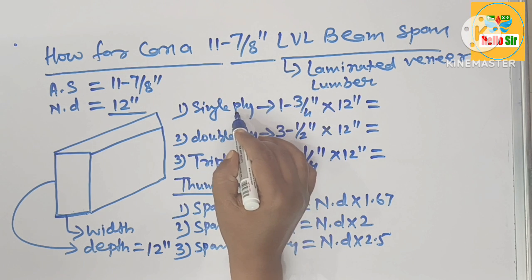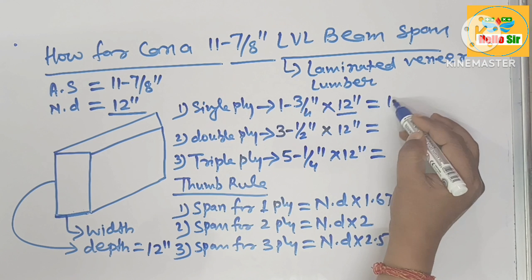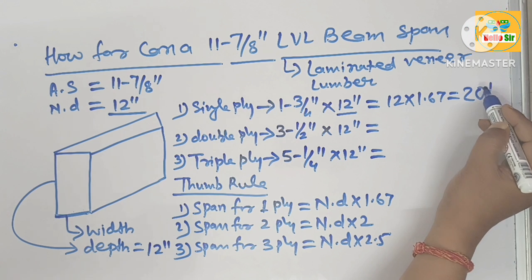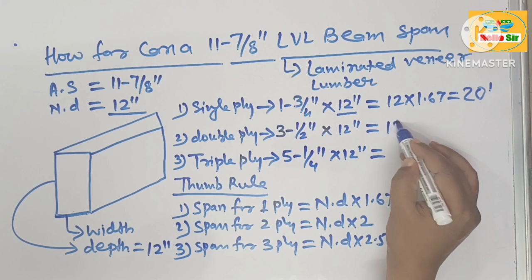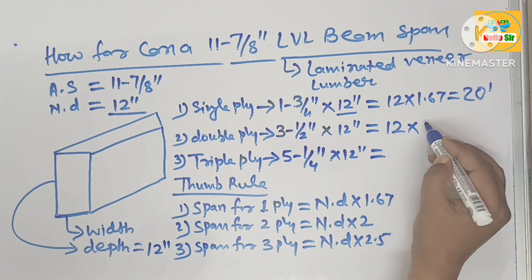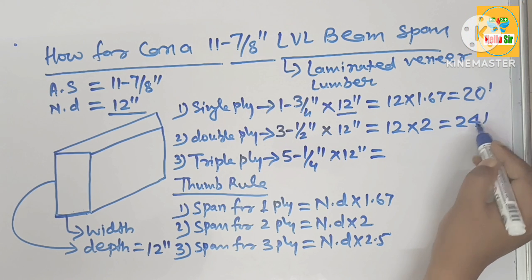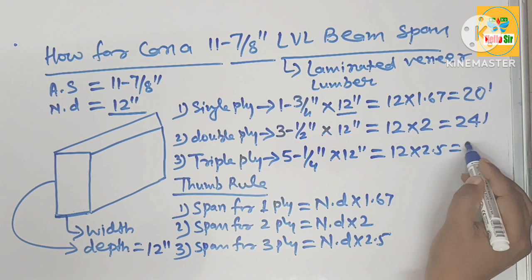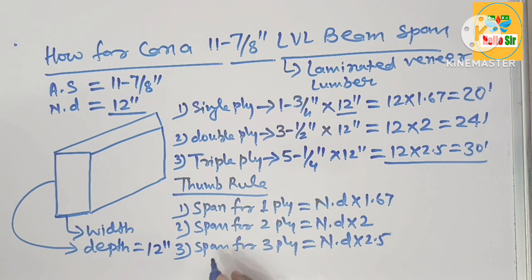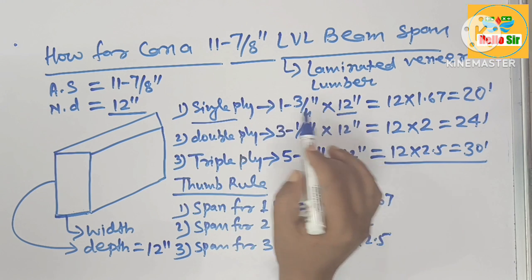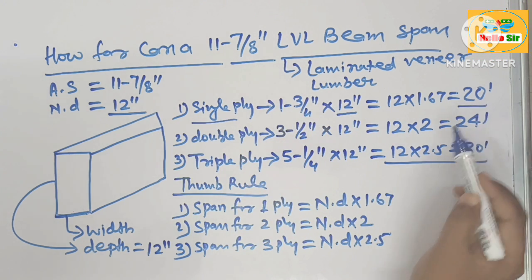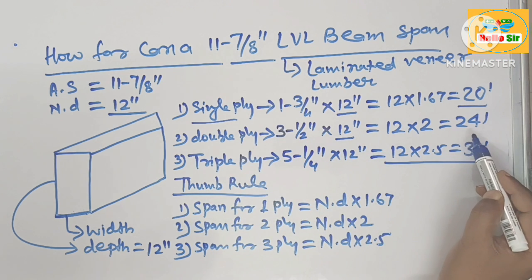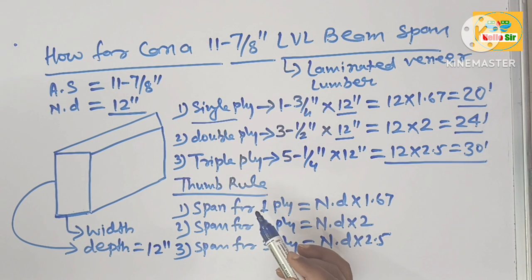For single ply, the nominal depth is 12 inches times 1.67, which equals about 20 feet. For double ply, 12 times 2 equals 24 feet. For triple ply, 12 times 2.5 equals 30 feet. This means single ply 12 inch LVL can span a maximum distance of 20 feet, and double ply 12 inch LVL can span a maximum distance of 24 feet.